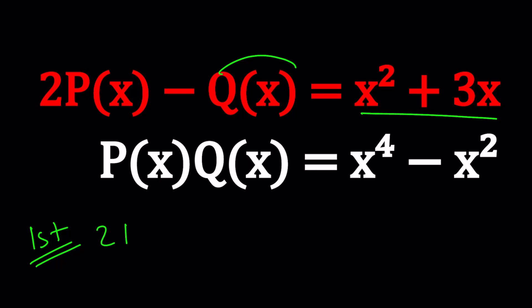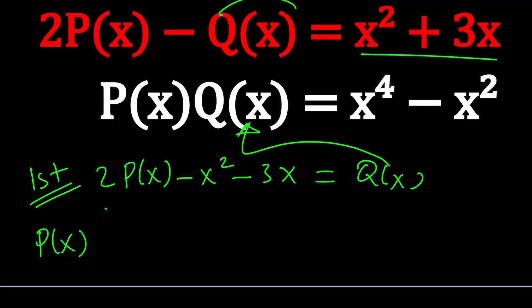x squared plus 3x will be subtracted and Q(x) will be ending up on the right-hand side. In other words, we're going to get something like this: 2P(x) minus x squared minus 3x equals Q(x). Now this is something we can substitute here. Let's go ahead and do that. P(x) multiply by Q(x), which is 2 times P(x) minus x squared minus 3x. And then when we substitute that for P(x),